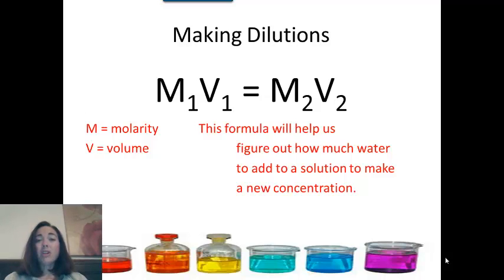The other thing you can do is to make a dilution. And this formula is M1V1 equals M2V2. The M's are the molarities, and the V's are the volumes. This will help you take one solution and dilute it to make a new concentration in a new solution.